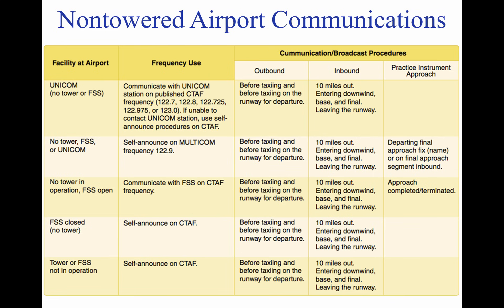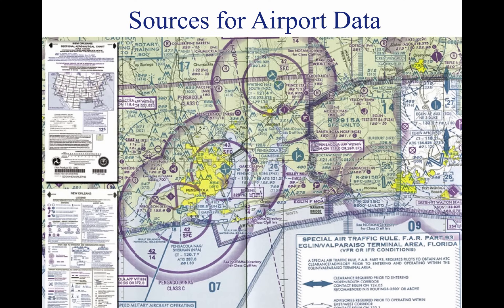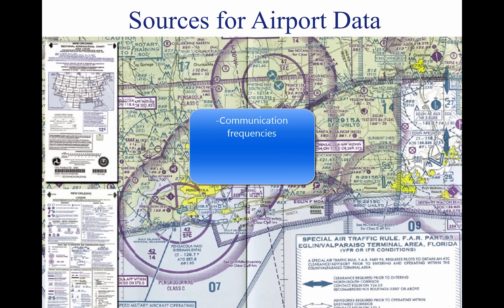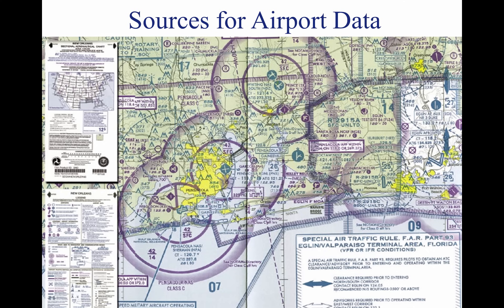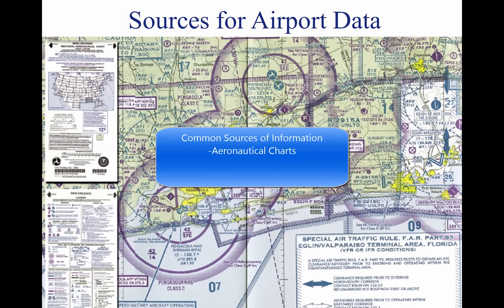This figure lists recommended communication procedures. More information on radio communications is discussed later in this tutorial. When a pilot flies into a different airport, it is important to review the current data for that airport. This data provides the pilot with information such as communication frequencies, services available, closed runways, or airport construction. Three common sources of information are aeronautical charts, the Airport Facility Directory (AFD), and Notices to Airmen (NOTAMs).